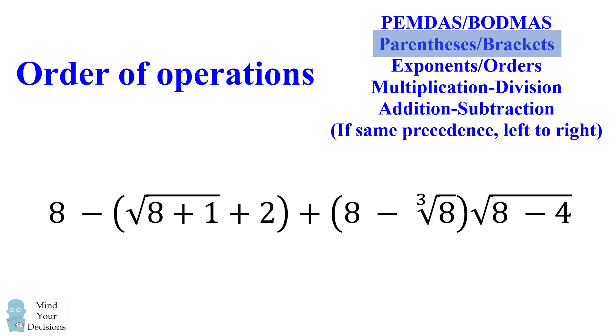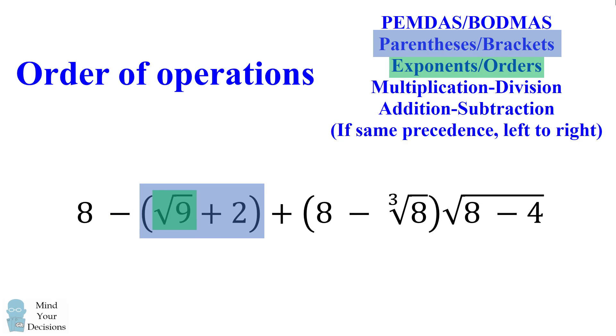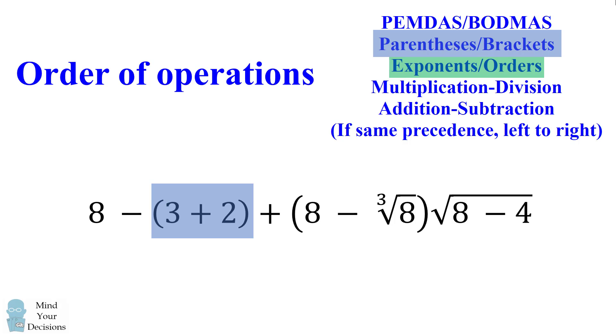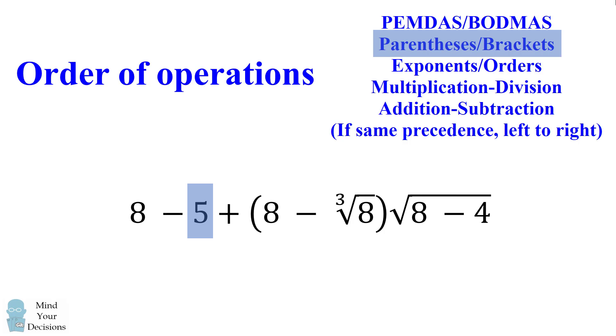So we'll get started with parentheses and brackets. We have two different parenthetical expressions, and we'll evaluate the first one on the left. Now within this parenthetical expression, we also have the square root which could be treated like an exponent. So we have the square root of 8 plus 1. The square root also has an implied grouping of 8 plus 1. So we'll first evaluate 8 plus 1 is equal to 9. We now have the square root of 9, which is equal to 3. We now return to our parenthetical expression, and we have 3 plus 2, which is equal to 5.